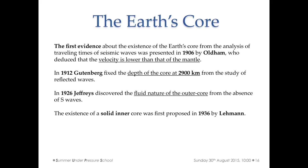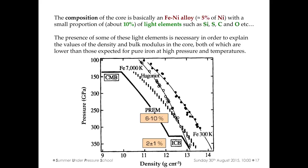The Earth's inner core is basically iron-nickel alloys — about 5% nickel and about 10% light siderophile elements. From high-pressure temperature experiments on pure iron compared against density from seismic models, you can clearly see that you need about 2% light elements to match the density — reducing that of pure iron. It is even clearer for the outer core, where you need up to 10% light elements to match the density from seismic models.